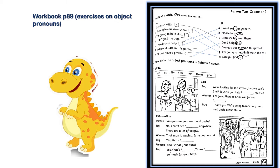Boy: 'We are looking for the station but we can't find it. Can you help us please?' Woman: 'I'm going there too, you can follow me.' Boy: 'Thank you, we are going to meet my aunt and uncle at the station.' At the station — woman: 'Can you see your aunt and uncle?' Boy: 'No, I can't see them. There are a lot of people.' Woman: 'That man is waving — is he your uncle?' Boy: 'Yes, that's him.' Woman: 'And is that your aunt?' Boy: 'Yes, that's her. Thank you so much for your help.'